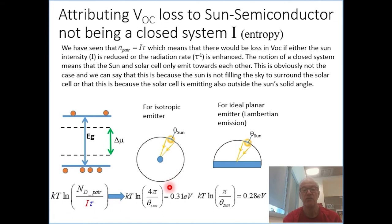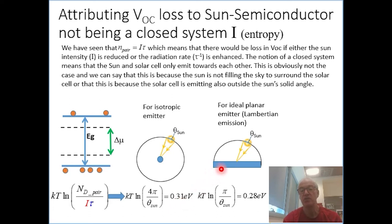And if you put this ratio into the same expression that we got before, we see that we lose — compared to what you would have expected — something like 0.3 V. If you use a device which has a back mirror, you practically force the device to emit only to half of the sphere, so you actually improve the relation between your device and the sun.